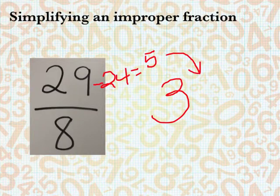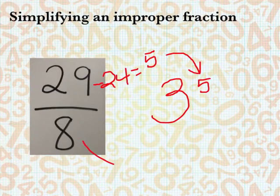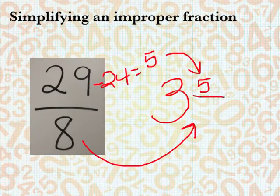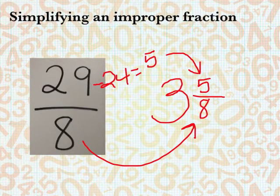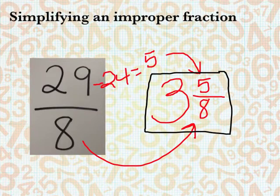So our 5 stays on top, and then our bottom always stays the same. And we have 3 and 5 eighths, just like the answer we got in the question before. And it was done using our math facts and our mental math.